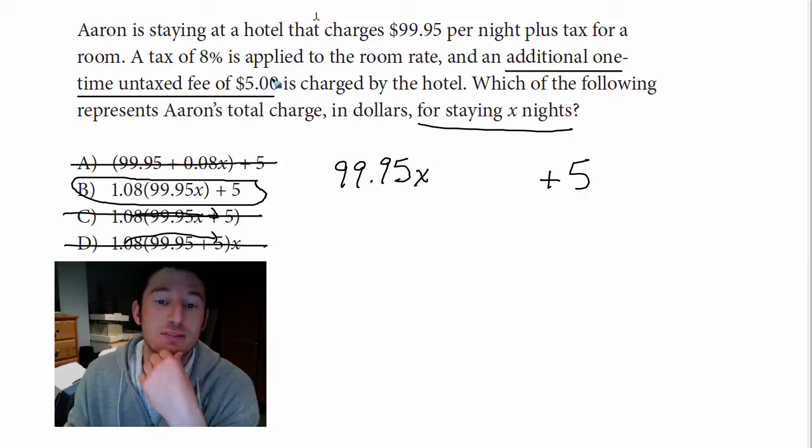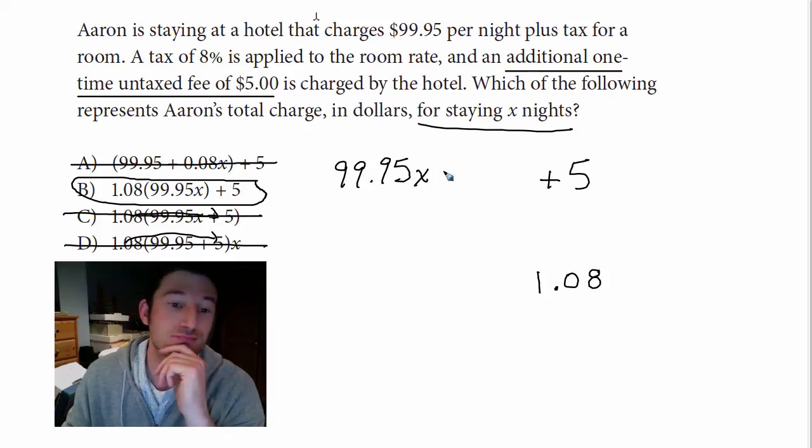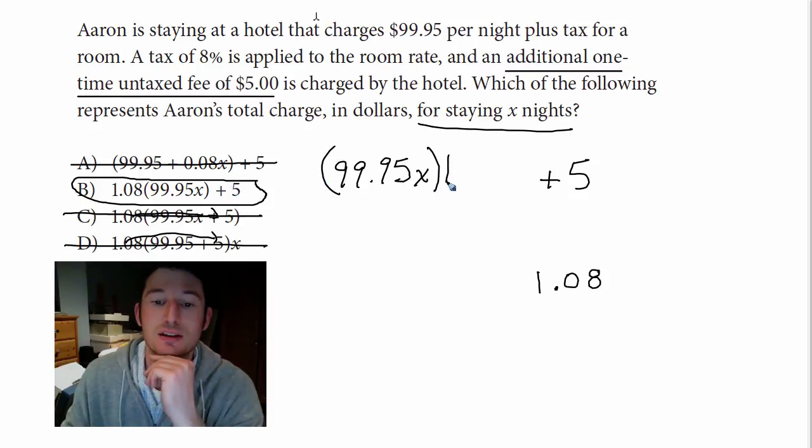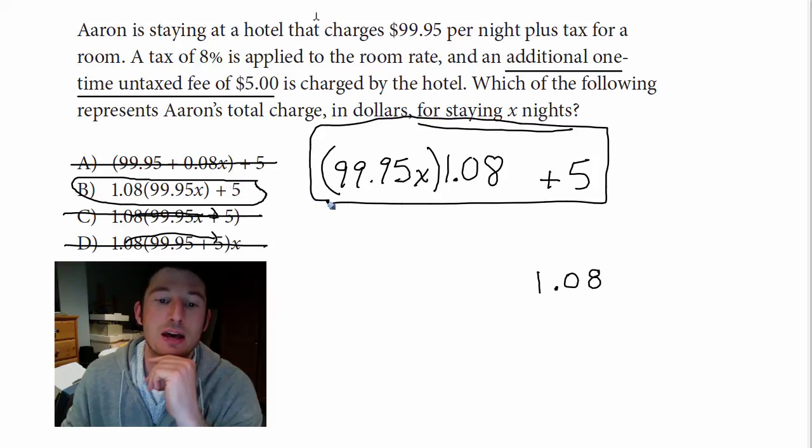A tax of 8%. So 8% is 0.08, right? And if you want to tax something to increase, put an 8% tax on something, you just put a 1 in the front. So, since it's 99.95, however many nights, times the 8% tax. Okay? And that's your final equation. But we kind of got there without all the information.